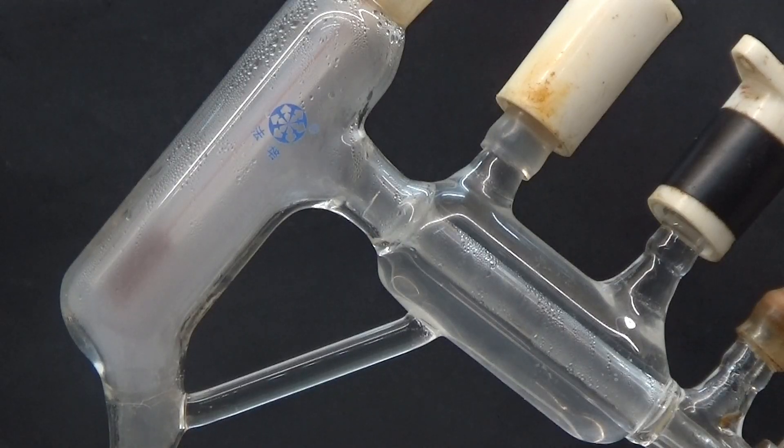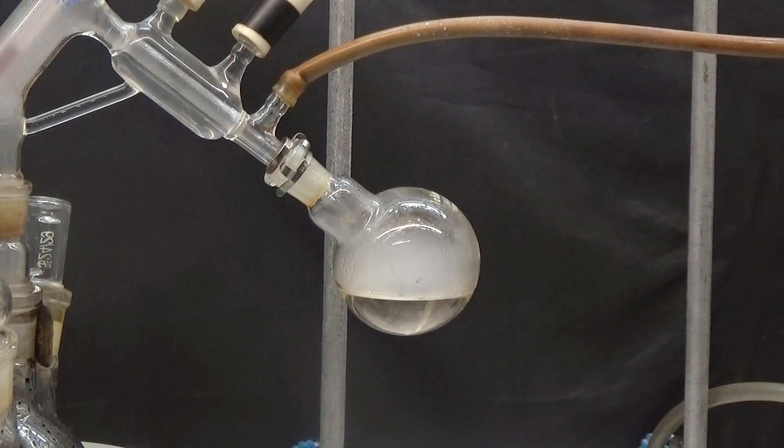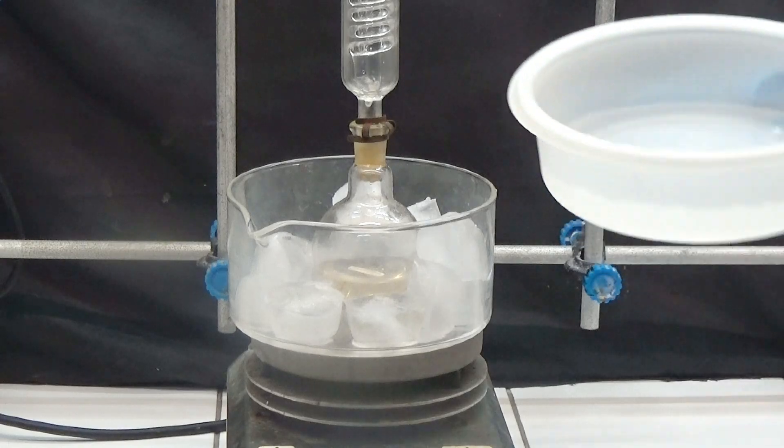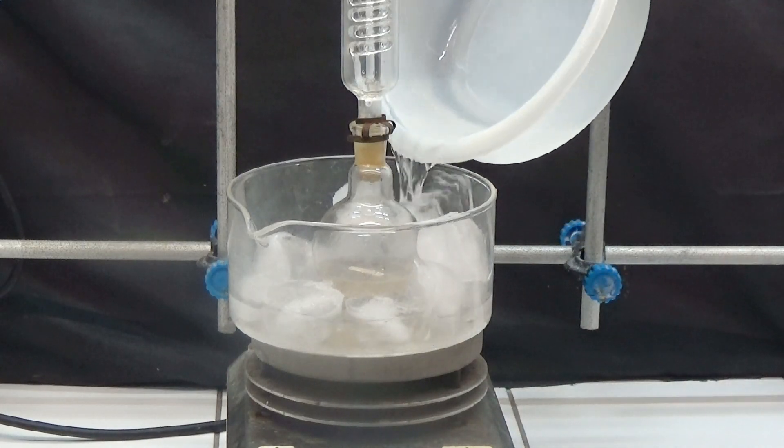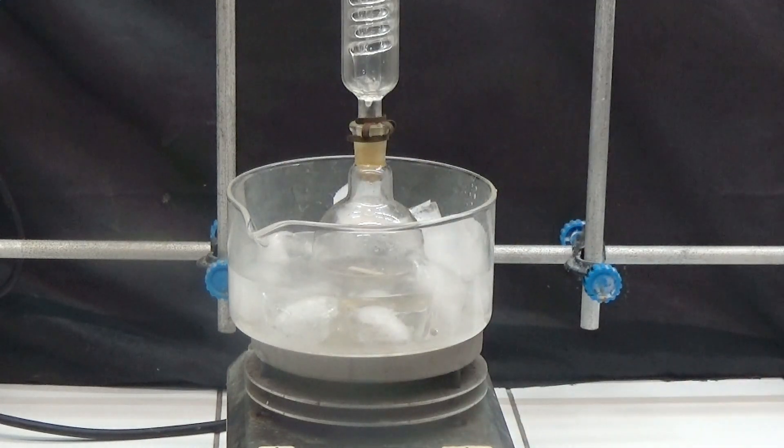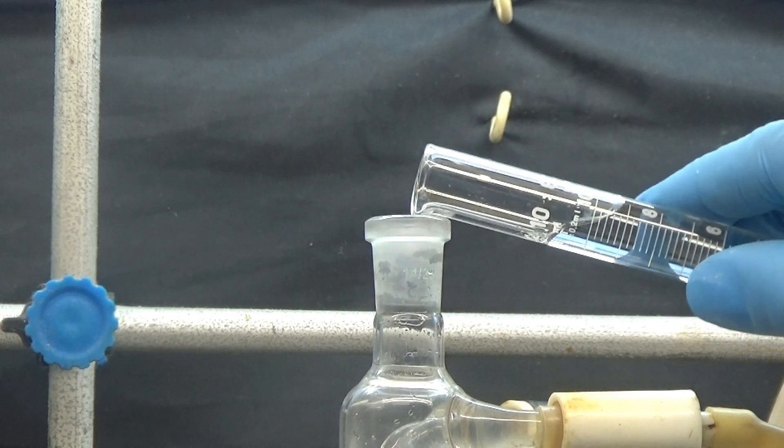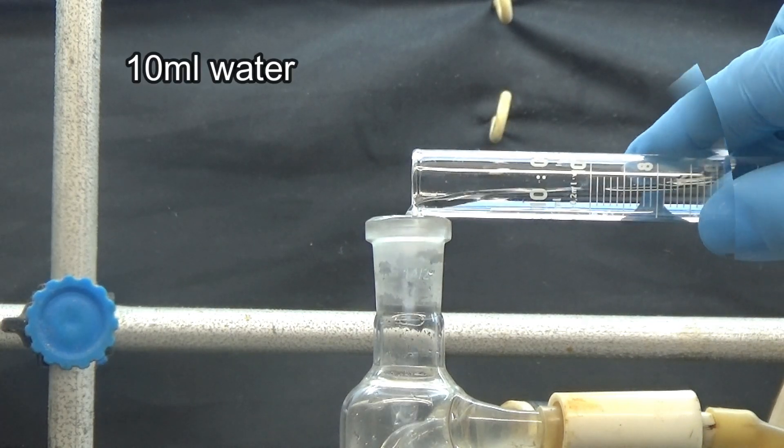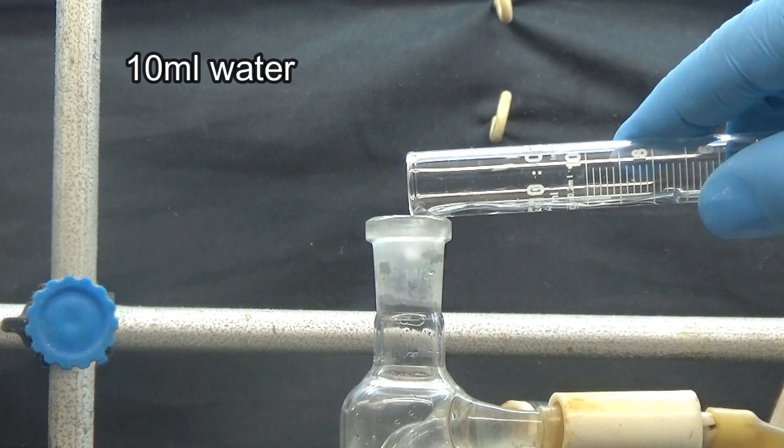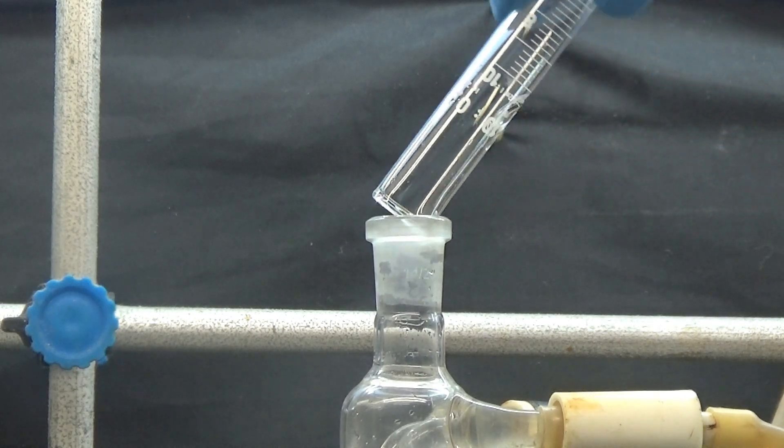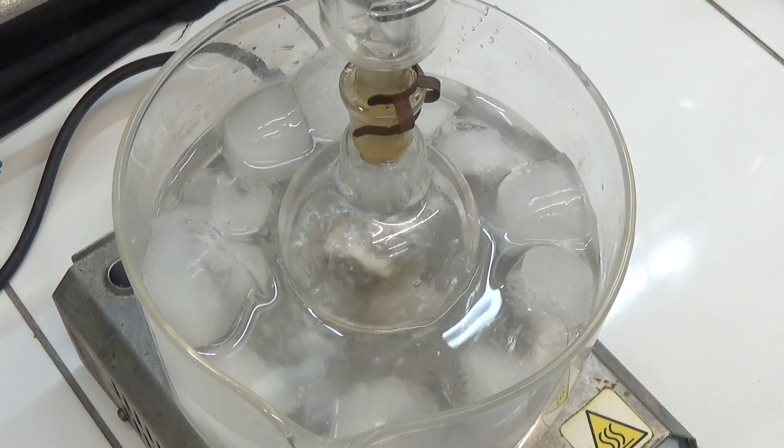When white fumes appear, stop the distillation process. The 100 milliliters flask is connected to a reflux condenser and immersed in an ice water bath. Add 10 milliliters of water to the condenser. Continue stirring for 30 minutes.